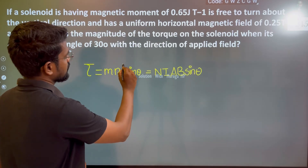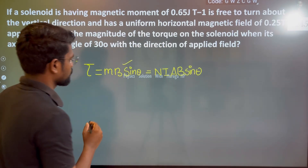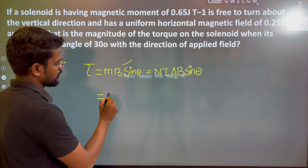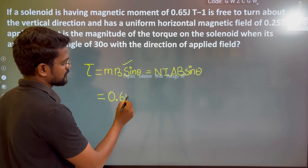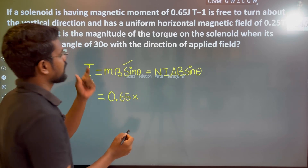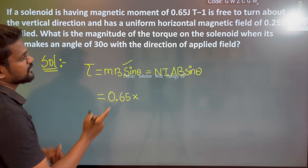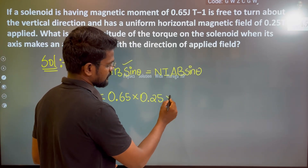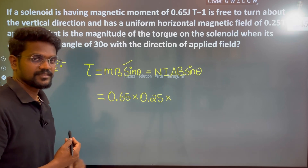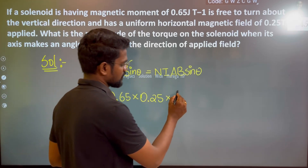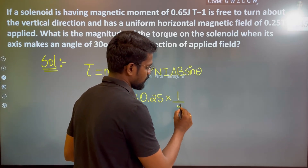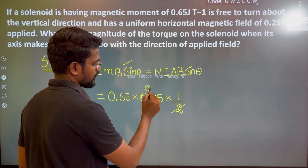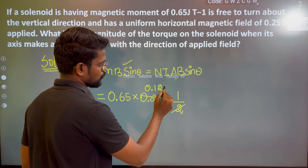So for this, M is 0.65 tesla, and then sin of 30 degrees. Sin 30 degrees is nothing but 1/2, so if you compute it, I get 0.125.